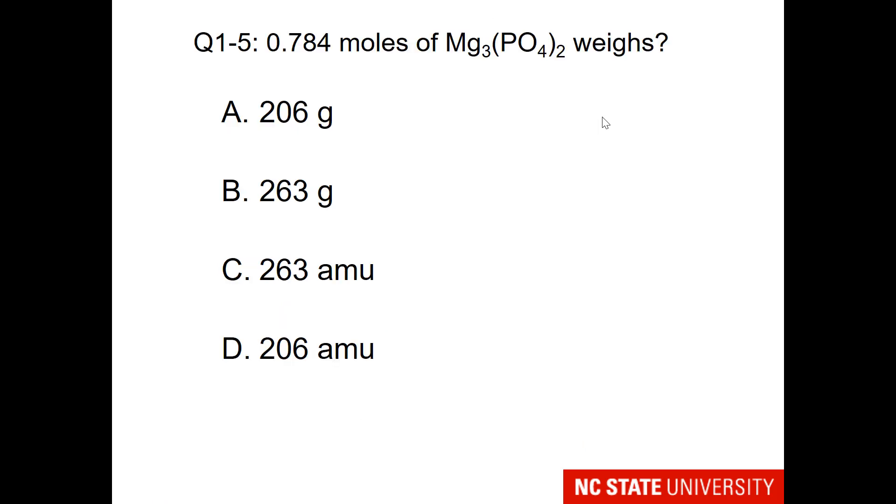So here is your question, 0.784 moles of magnesium phosphate. Please give the mass. So in a previous question, you should know how many magnesiums, phosphoruses, and oxygens are in this compound. My only caution to you is, you're not being asked for one mole, you're being asked for 0.784 moles. So once you get the mass of one mole, make sure that you adapt it so that you are scaling it or proportioning it for 0.784 moles.